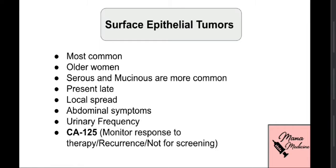Surface epithelial tumors are the most common of all ovarian tumors, most commonly found in older women. The serous and mucinous subtypes are more common than endometrioid or Brenner. They present very late because there is a lot of room for growth, and when the tumor has grown significantly it presents with abdominal symptoms or urinary frequency due to pressure against the bladder or other peritoneal structures.